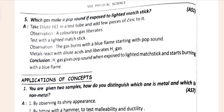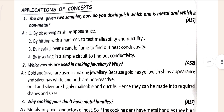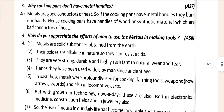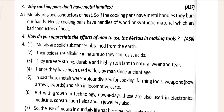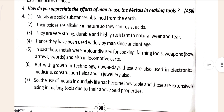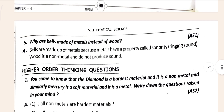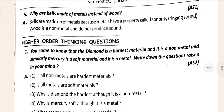Now come to the 'Application of Concept' section. Here you can see the first and second question answers, followed by the third and fourth question answers. The fourth question is: 'Why do cooking pans not have metal handles?' That answer is given here. Then: 'How do you appreciate the effects of metals in making tools?' And the fifth question: 'Why are bells made of metal instead of wood?'